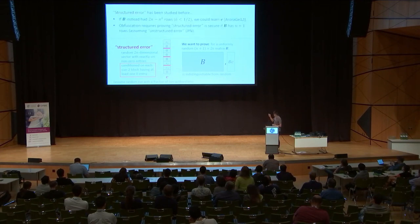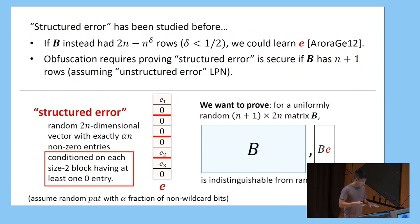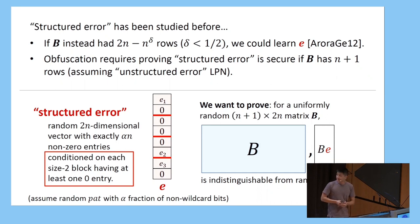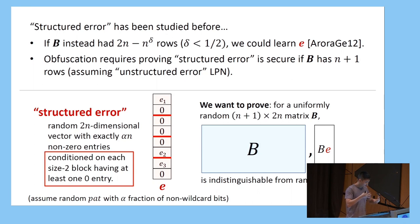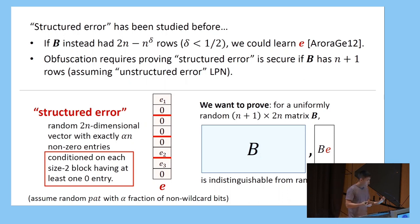This problem of structured error in LPN has actually been studied before, but in the context of attacks. In particular, with the same setup but where B has 2n minus n^delta rows, you could actually learn E by a relinearization attack. So to prove the security of our obfuscation, we had to prove a new thing about structured error LPN — specifically, that it is secure in parameter regimes not previously known to be implied by LPN.